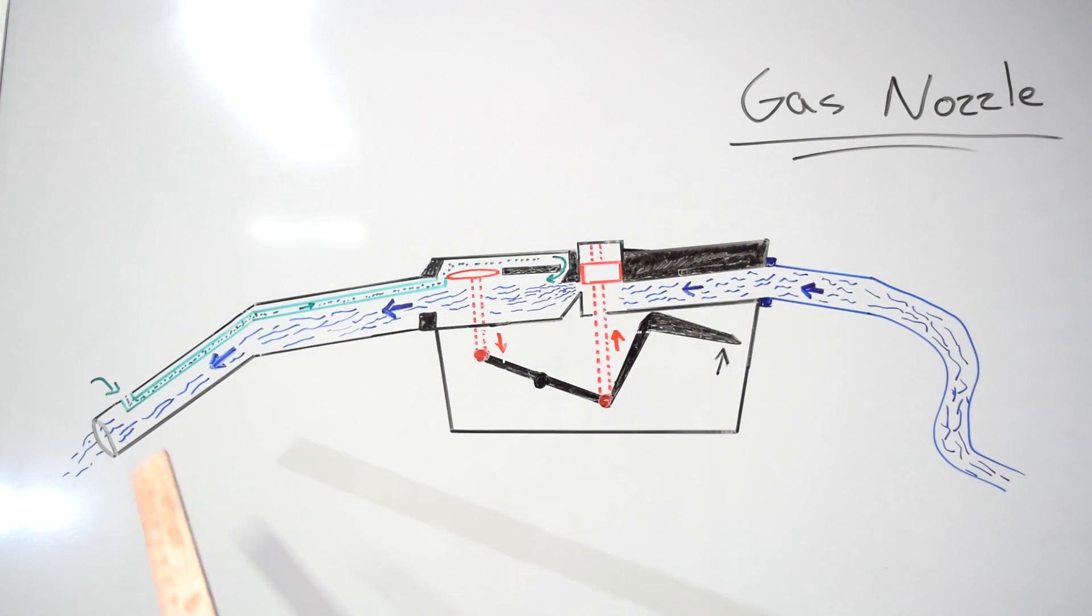So as you're gassing up and your tank gets full, the gas that comes up through your filler pipe is going to block off the flow of air that's going through this tube. Then the gas that's traveling through here and pulling your vacuum on this circuit is not going to pull in air, so instead it pulls up on this diaphragm.